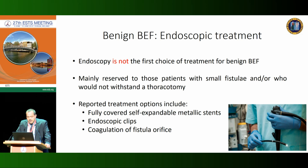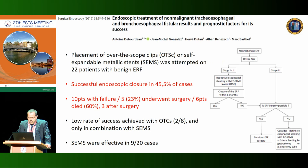For benign bronchoesophageal fistulas, endoscopy is not the first-line treatment; it should be reserved for patients with very small fistulas, those not fit for surgery, or as a bridge before surgery. We have different techniques and devices available today: fully covered self-expandable metal stents, silicone stents, endoclips, surgical glue, and coagulation. However, the successful rate of endoscopic closure of benign fistulas is only about 46%, and the mortality in failed patients is approximately 60%. So definitively, endoscopic treatment is not the first choice for benign bronchoesophageal fistula.